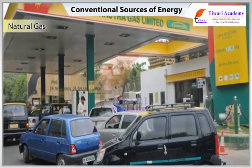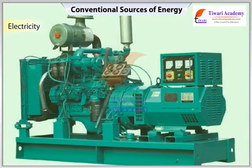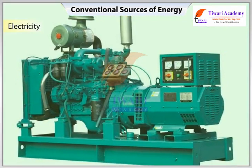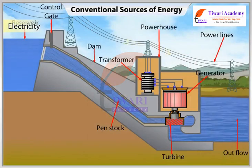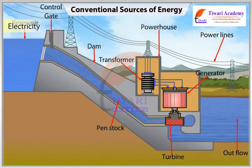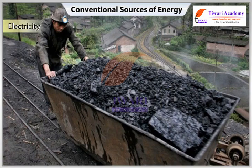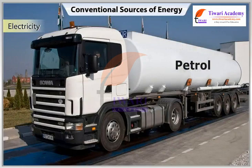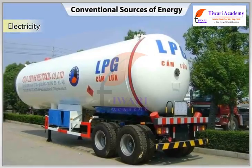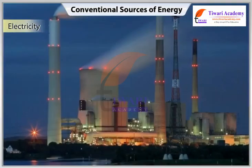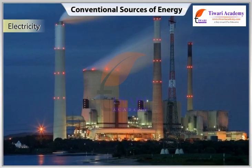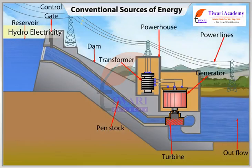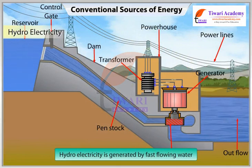Electricity generators are used to produce electricity. If the turbine of a generator is driven by running water, the electricity produced is called hydroelectricity. If mineral fuels such as coal, petroleum, and natural gas are burnt to drive turbines, the electricity produced is called thermal power or thermal electricity.